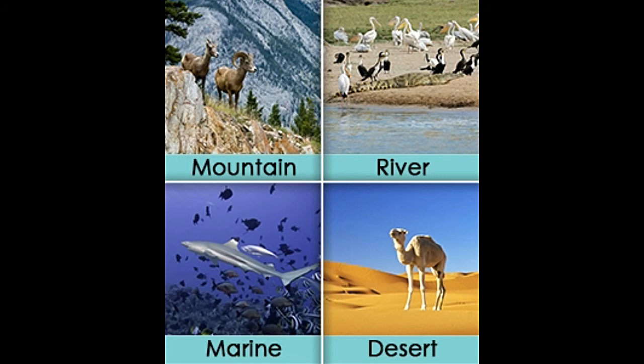Life on Earth is categorized under specific levels of organization, depending upon various factors of different organisms such as complexity, type, population, and adaptation to a specific biome. Ecosystems are considered one of the highest ranks of cohabitation, which encompasses our planet in the form of a single level called biosphere.